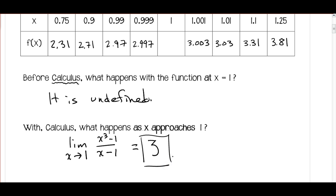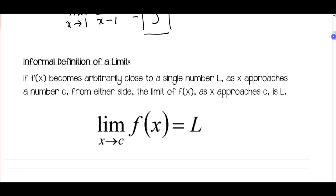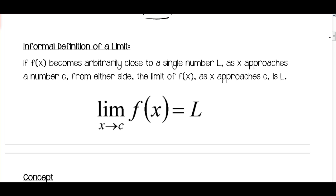Even though we don't know or can't find the value of the function at 1, we can figure out what's happening as we get closer and closer to 1. The informal definition: if f(x) becomes arbitrarily close to a single number L as x approaches a number C from either side — just like in our example approaching from both sides of 1 — the limit of f(x) as x approaches C is that number L.